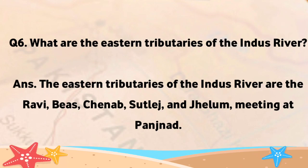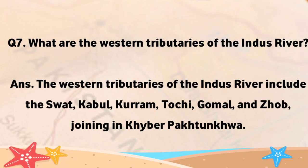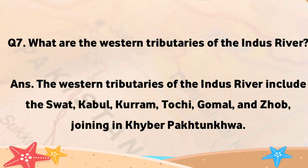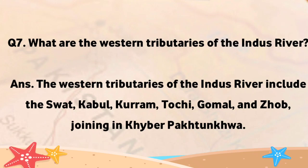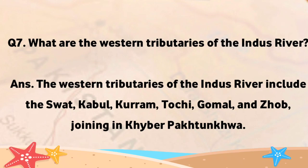What are the western tributaries of the Indus River? The western tributaries of the Indus River include the Swat, Kabul, Karam, Tochi, Gomal, and Zab, joining in Khyber Pakhtunkwa.